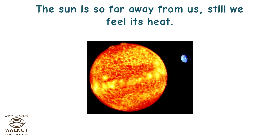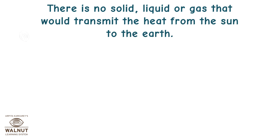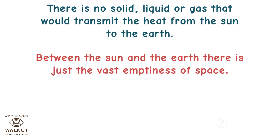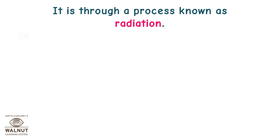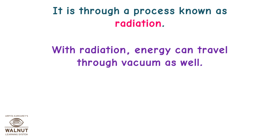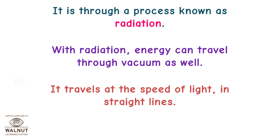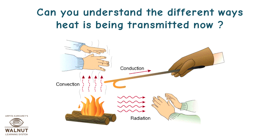The sun is so far away from us, still we feel its heat. There is no solid, liquid, or gas that would transmit the heat from the sun to the earth — between the sun and the earth there is just the vast emptiness of space. So just how does the heat from the sun reach the earth? It is through a process known as radiation. With radiation, energy can travel through a vacuum as well. It travels at the speed of light in straight lines.